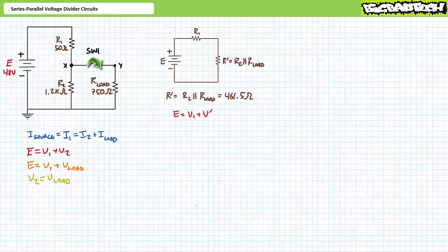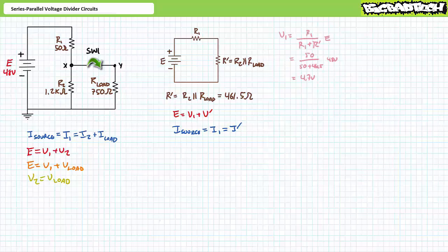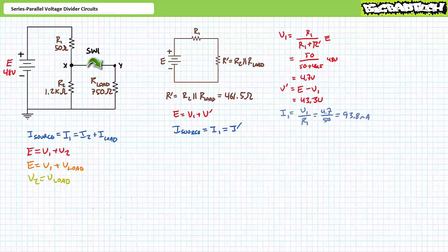A Kirchhoff's voltage law analysis of the pure series simplification suggests that E equals V1 plus V prime. A KCL analysis demonstrates that source current equals I1 which equals I prime. Using the voltage divider rule, V1 is 4.7 volts. An algebraic manipulation of the KVL equation demonstrates that V prime is the remaining 43.3 volts. An application of Ohm's law demonstrates that I1 is 93.8 milliamps, and source current also equals 93.8 milliamps.